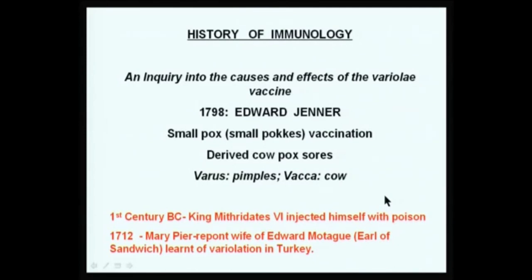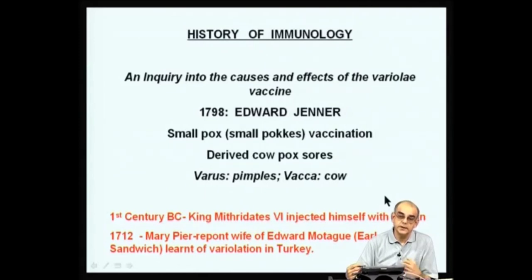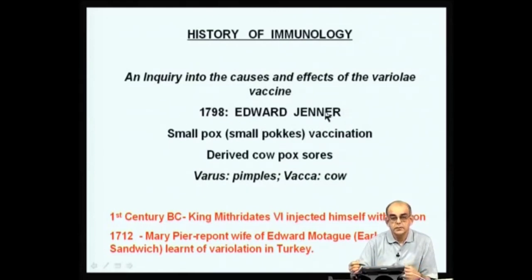To look at the history of immunology, if you really look at it, it probably began as man evolved — there is no clear beginning to this history. If you look at various historical texts, you will see the scourge that plague was causing during ancient history. But a systematic entry of historical events actually begins with what happened with Edward Jenner, who in 1798 came up with a vaccination against smallpox.